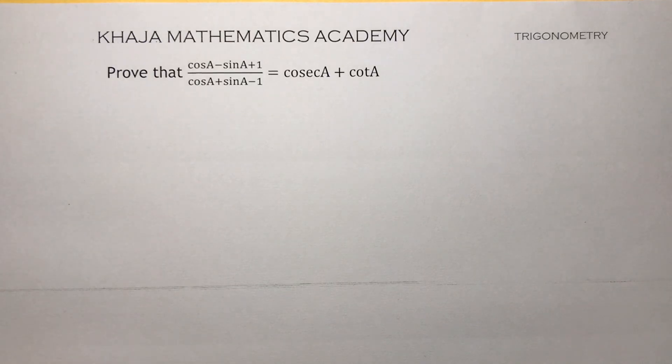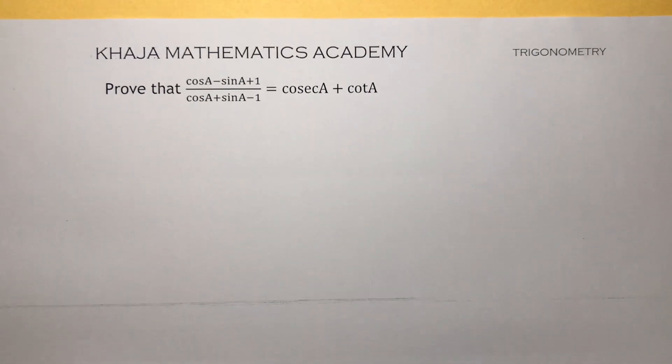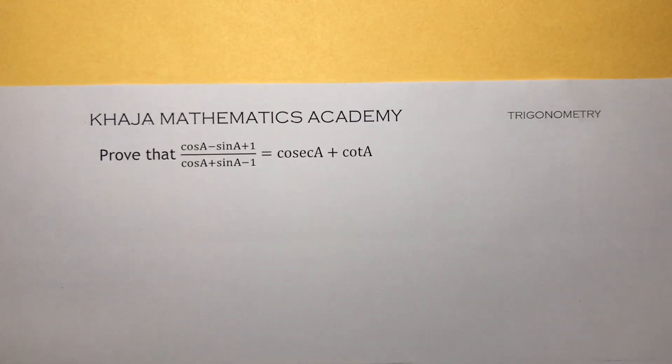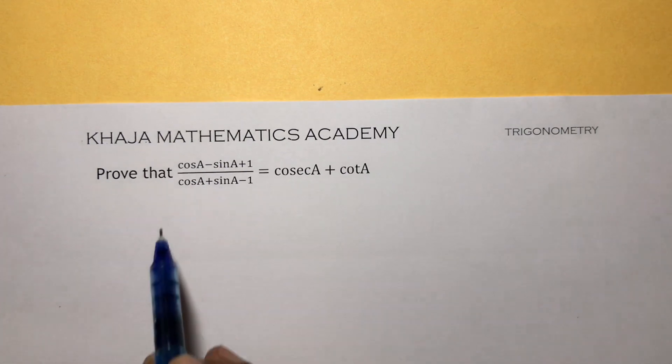Prove that (cos A - sin A + 1) / (cos A + sin A - 1) = cosec A + cot A. This is one of the important problems from trigonometry, so take LHS.